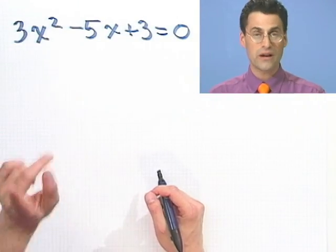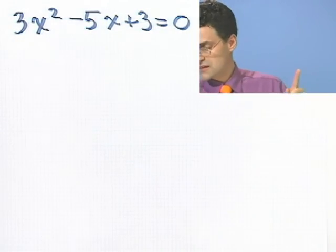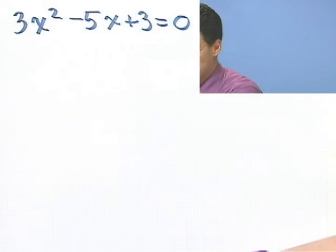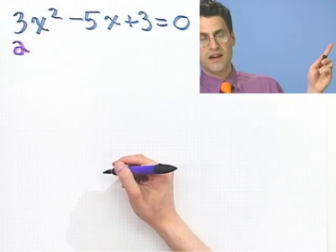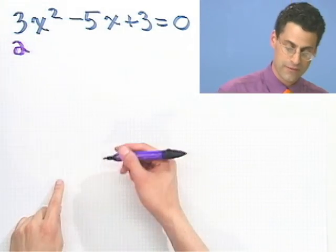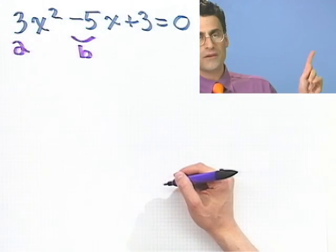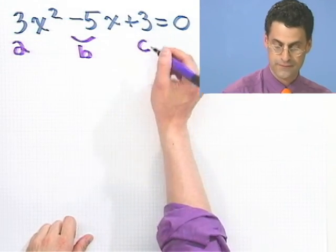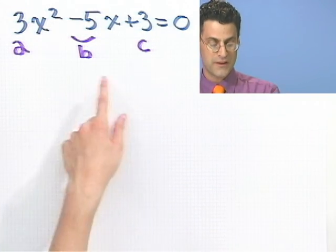With the quadratic formula, you have to understand who's playing what role — think of it as a play, and now we're putting in the actors. The role of a is played by 3, because that's the coefficient on the x squared term. The role of b is played not by 5, but by negative 5. And in the role of c, we have the number 3. So now we're going to plug in to the quadratic formula with these values.